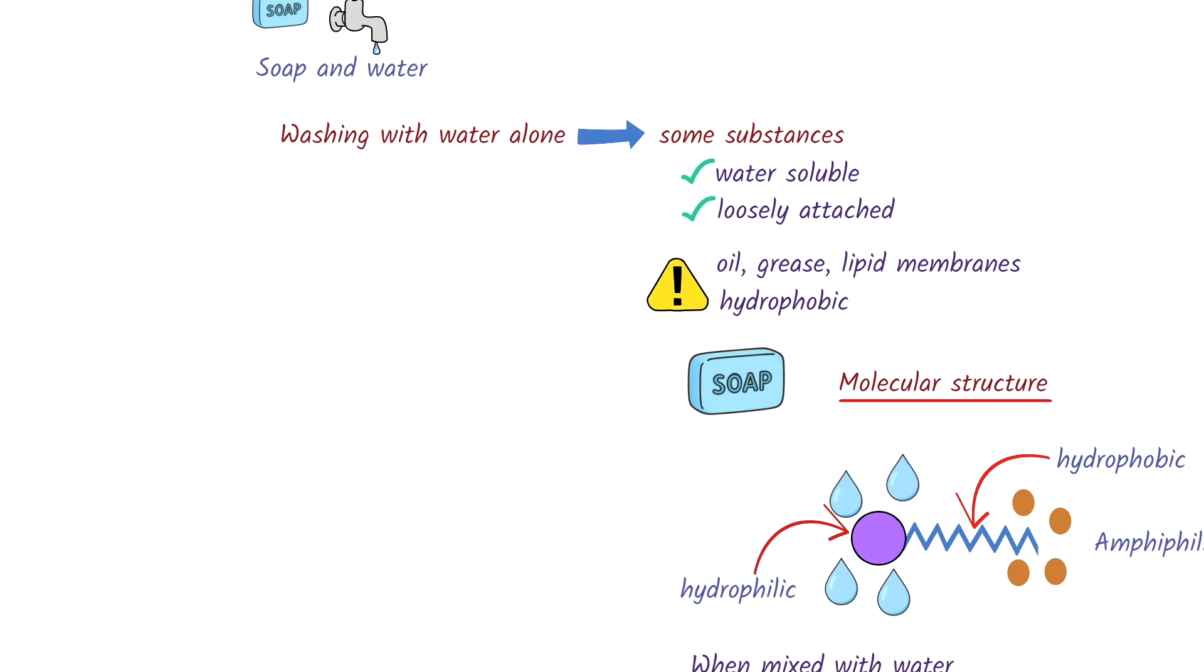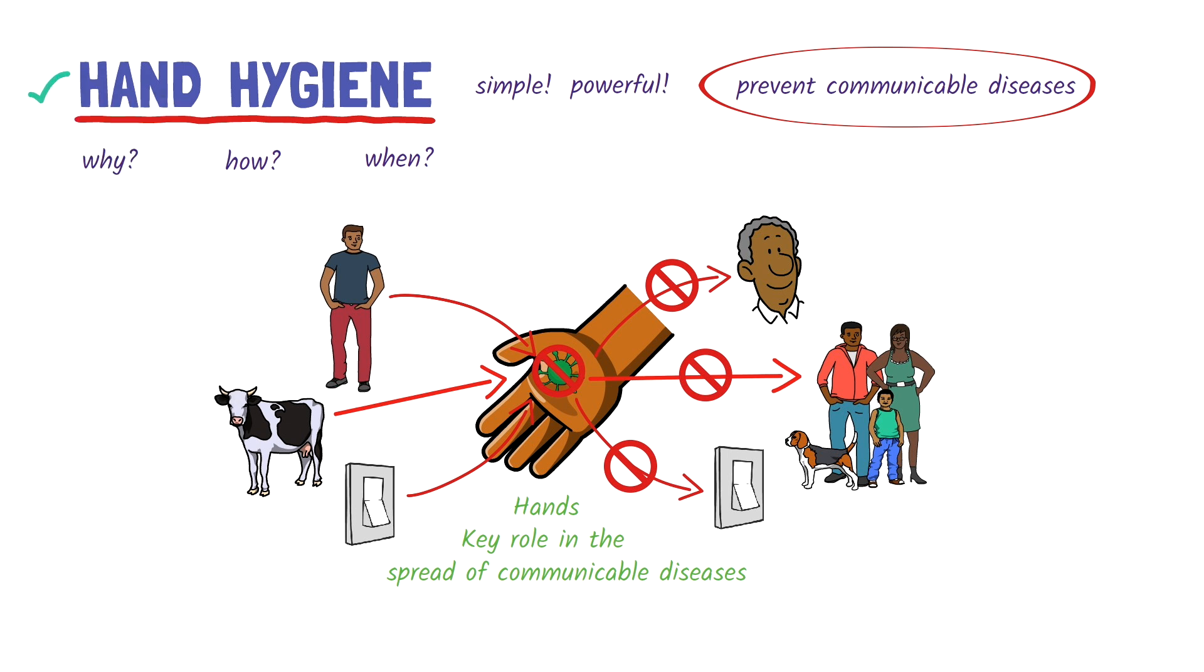And that's a quick look at hand hygiene, an important public health measure that remains one of the most effective tools for preventing the spread of communicable diseases. We've had a look at why it's important, how it works, and when to do it. For more information, have a look at the resources below.